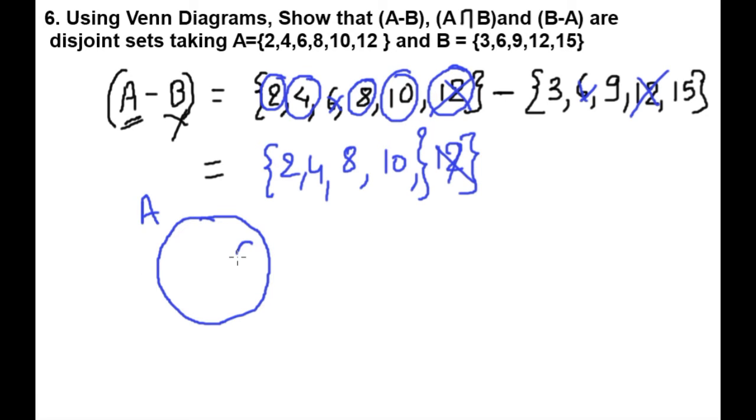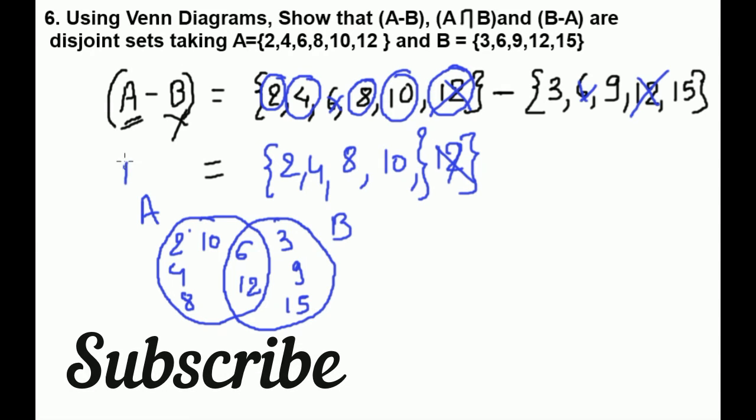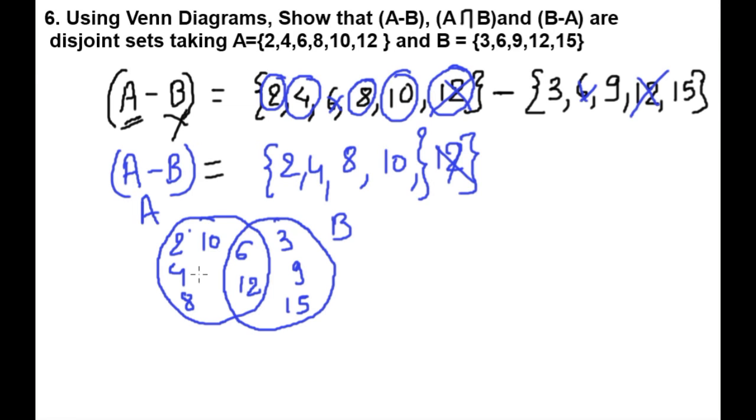Which area is A-B? You can see 2, 4, 8, 10 in this area. This green shaded region is our A-B.